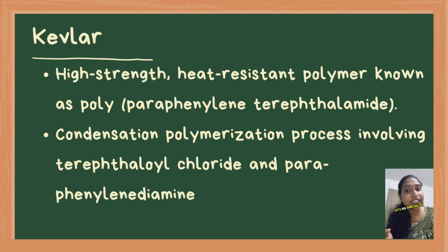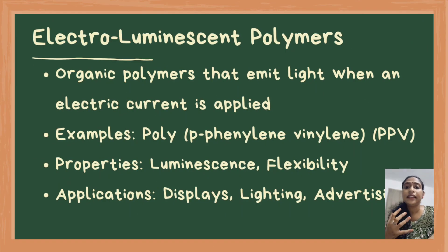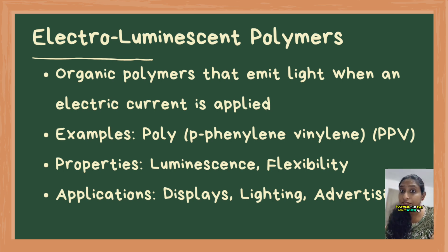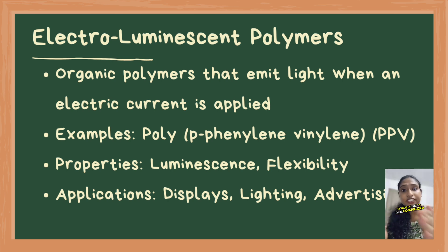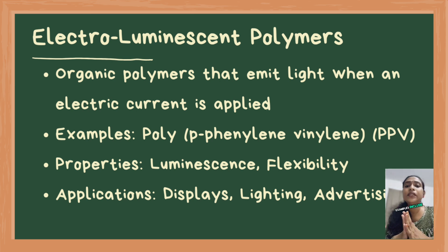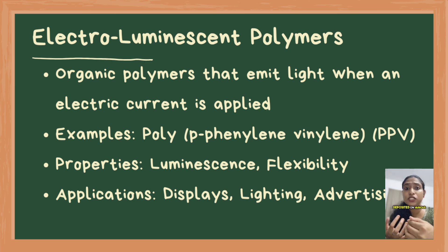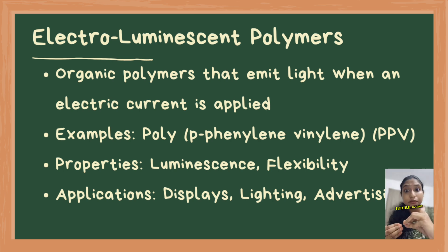Let's see specialty polymers now. Electro-luminescent polymers are organic polymers that emit light when an electric current is applied, typically due to their conjugated systems with alternating double and single bonds. Examples include polyphenylene vinylene, which is PPV. These polymers are flexible and can be deposited on various substrates, making them suitable for use in OLED displays, flexible lighting systems and advertising displays.